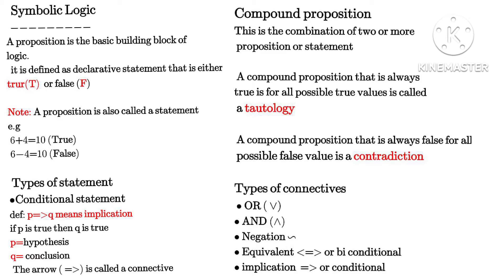The arrow is called a connective. Now before we look at different types of connectives, let's check out what compound propositions are. We already know that a proposition is also called a statement and is the basic building block of logic. A compound proposition is the combination of two or more propositions. When a compound proposition is always true, we call it a tautology.